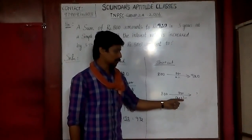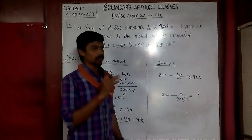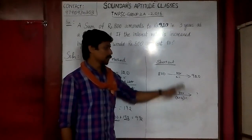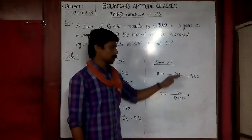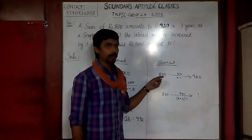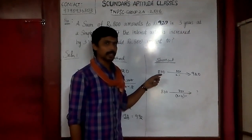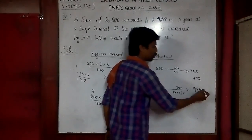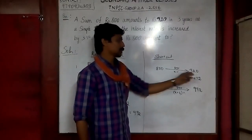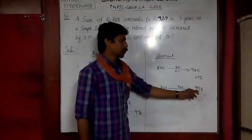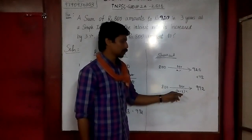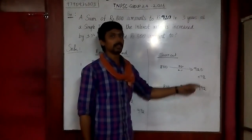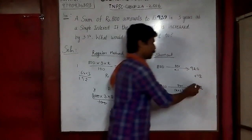In 1 year the extra interest is 3%, so for 3 years it is 9%. So what is 9% of 800? 9% of 800 is 72. So the amount increases by 72, giving us 920 + 72 = 992. So: 800 invested at X% for 3 years gives 920; at X+3% for 3 years, with 9% extra on 800 = 72 increase, the answer is 992.